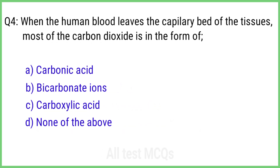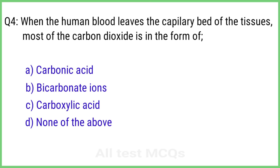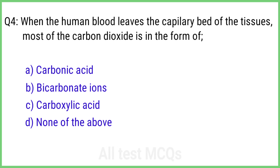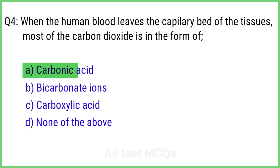Question 4. When the human blood leaves the cavity of the tissues, most of the carbon dioxide is in the form of? The right answer is option A: Carbonic acid.